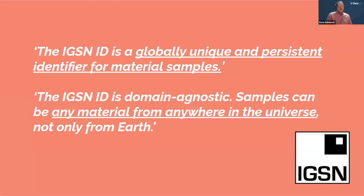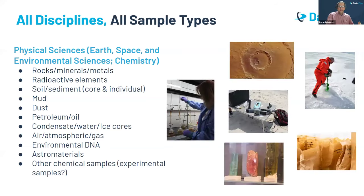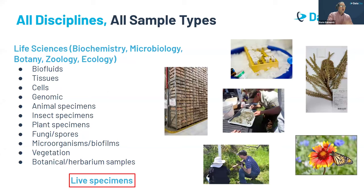The IGSN ID is a globally unique and persistent identifier for material samples and it is domain agnostic — samples can really be any material from anywhere in the universe. We really are talking all disciplines, all sample types. Looking at the physical sciences and airspace, environmental sciences and chemistry, these are some of the sorts of samples you might be thinking about.